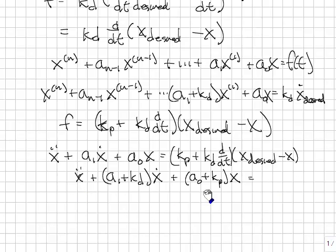The interesting thing here is we have a second order system, and the characteristic equation for this is s squared plus a1 plus kd times s plus a0 plus kp. And in this case, you can choose either of the two coefficients.